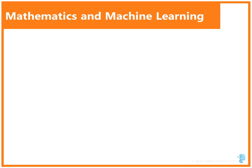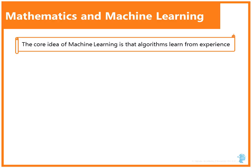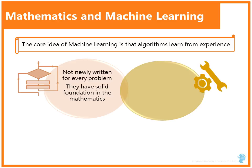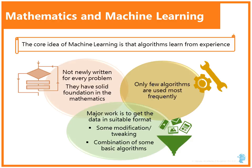Mathematics and machine learning. In our previous discussion, we tried to get an overview of machine learning. Let's try to go a little deeper. At the core of machine learning is the idea that algorithms can learn from experience and these algorithms are not some random algorithms newly written for every problem but these are algorithms that have solid foundation in mathematics. If you look at the tools that are used for machine learning algorithms, you will realize there are only few algorithms that are used most frequently and most of the work in machine learning is just trying to get the data in a format that is suitable for machine learning algorithm and some modification or tweaking or some combination of basic algorithms.